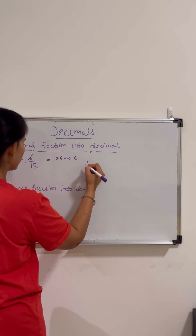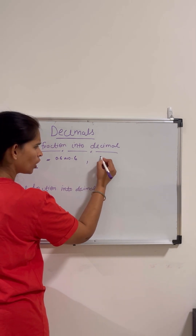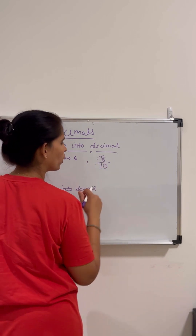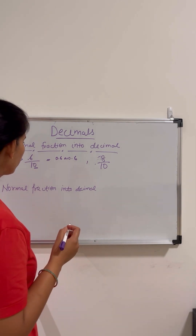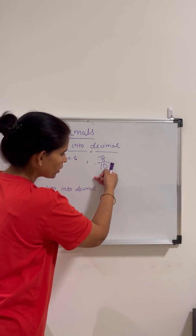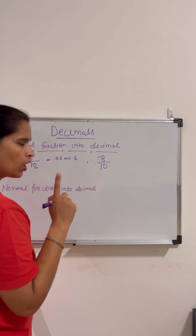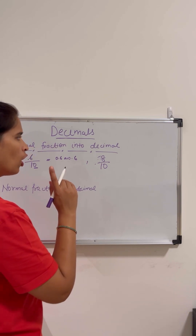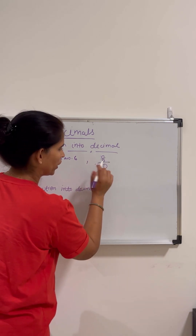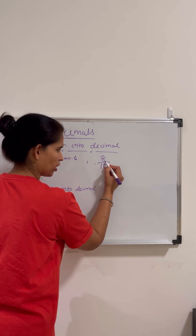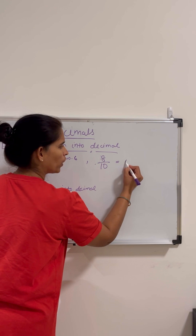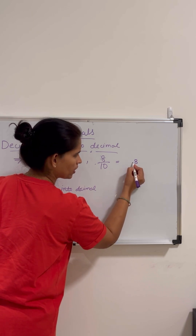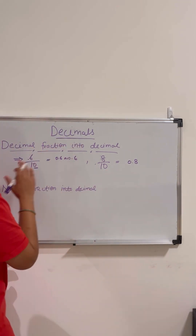Let me give you one more example: 8 by 10. I have to convert it into a decimal. We see there is only one zero in the denominator. So we put the decimal point after one digit in the numerator. There is only one digit — eight — so we get 0.8.